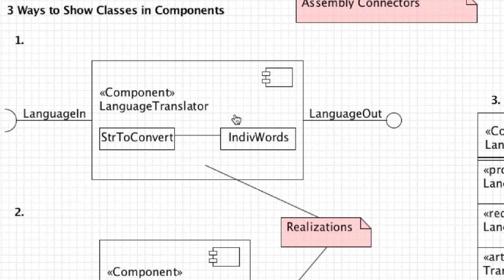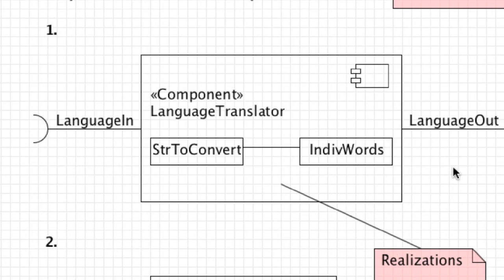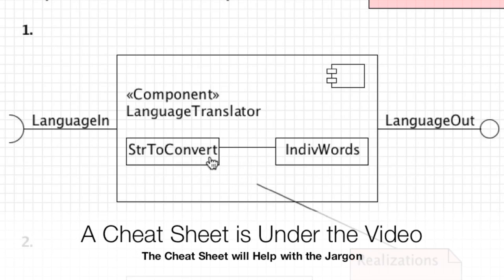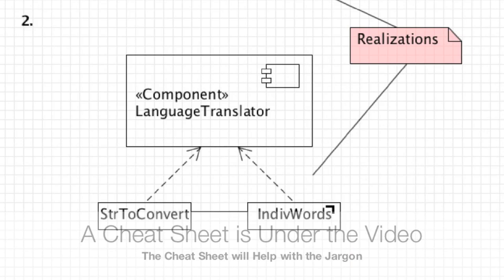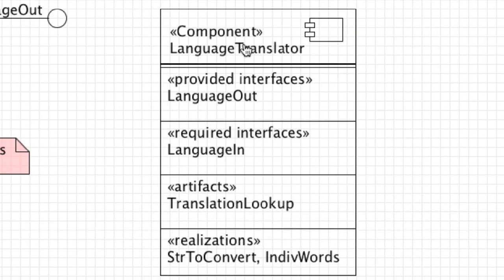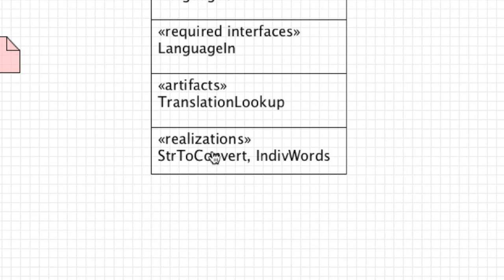Components like I said before are going to contain many different classes, and like before there are three different ways to show classes inside of your components. This box on screen represents a component, and you can see the two interfaces. Inside the component you document or show what classes are going to exist inside and how they interact. These classes are known as realizations. There's also another way to document these — not used very much since it's not very compact — where you document objects inside the component outside of the component itself. The more common way lists provided interfaces, required interfaces, the artifact, and then the realizations which are the classes that make up your component.